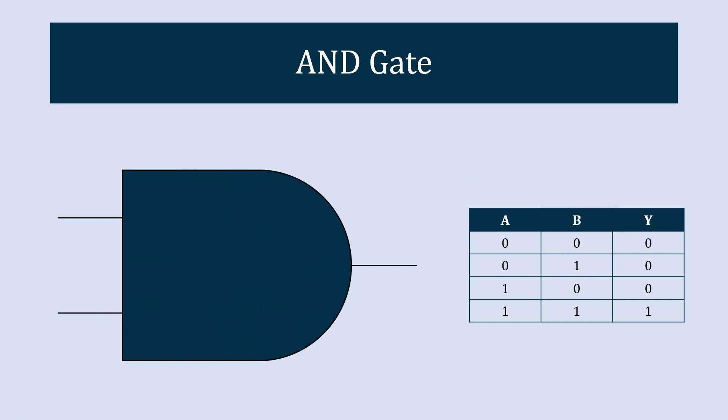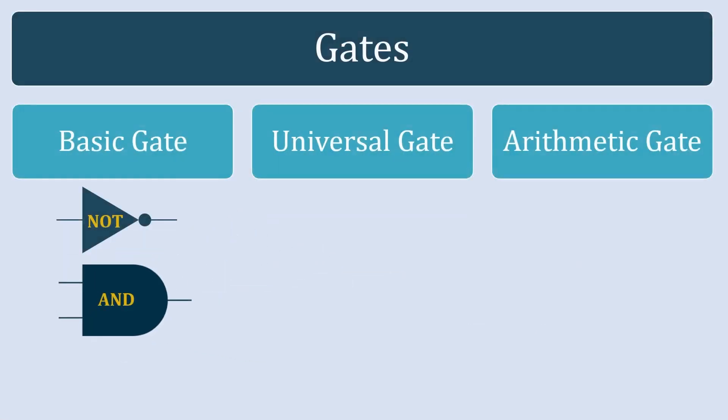The output will be true or 1 only if all the inputs are 1. The last case in the truth table shows output 1 because both inputs are 1. The next gate in the category is the OR gate.